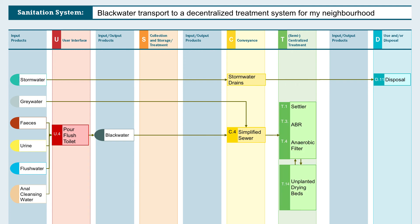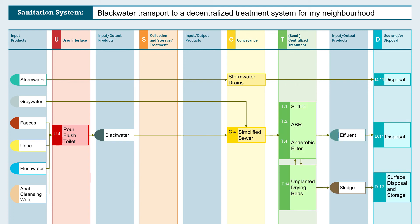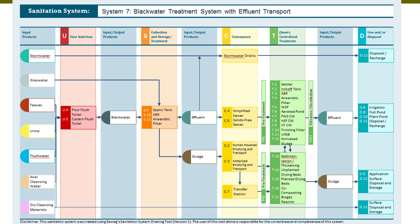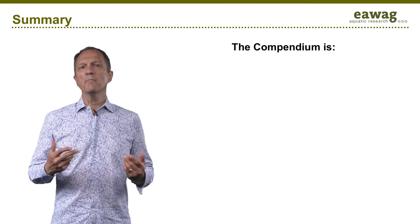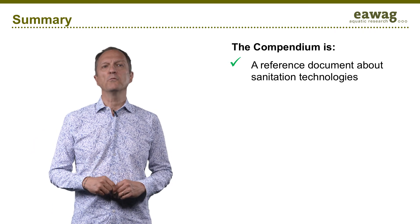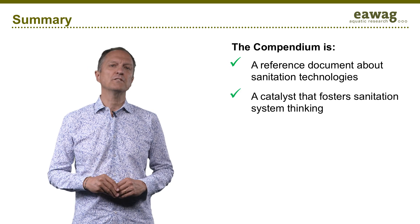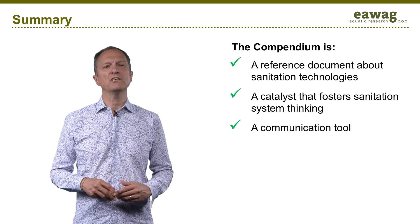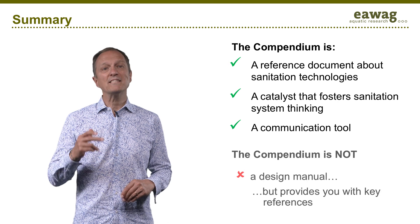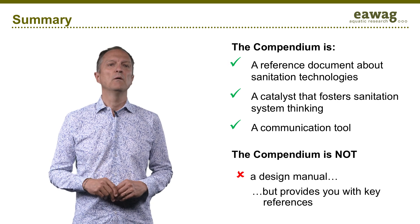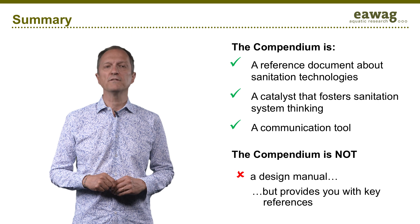From the user interface to the use or disposal of the final product, you can also obtain the same result by starting with an existing system template and removing the unwanted technologies. In summary, the compendium is a valued reference document about sanitation technologies, a catalyst that fosters sanitation system thinking, and a communication tool. However, it is not a design manual, but it does provide you with key references.